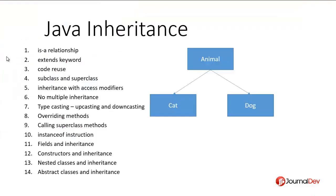The next thing is typecasting in the case of inheritance. We have two types of typecasting. One is upcasting — if we create a variable cat of type cat, we can assign it to a variable of type animal. Whenever we are assigning a subclass object to a superclass variable, that is called upcasting. Similarly, we can create a cat object, assign it to an animal object, and then reassign it back to a cat object — that is called downcasting. Let's see this with a simple program.